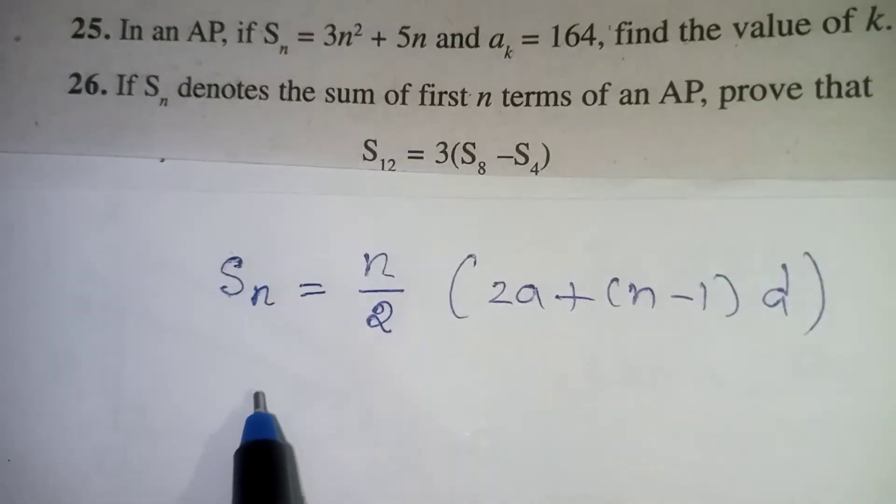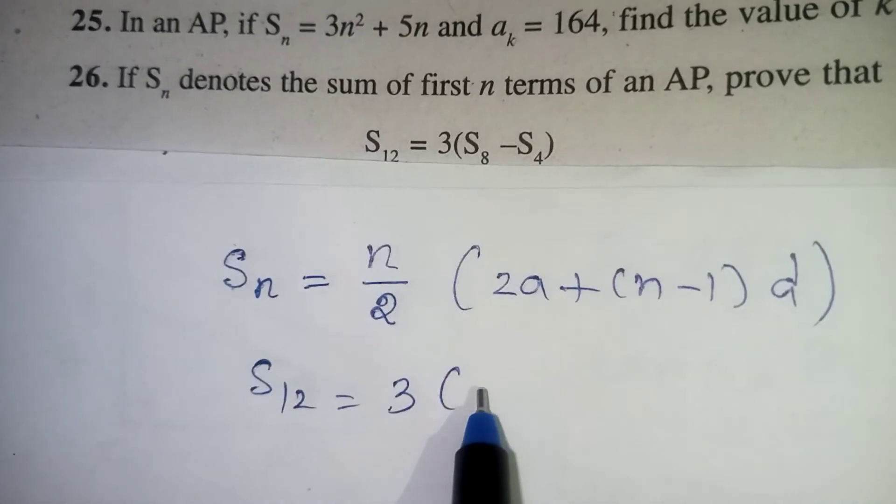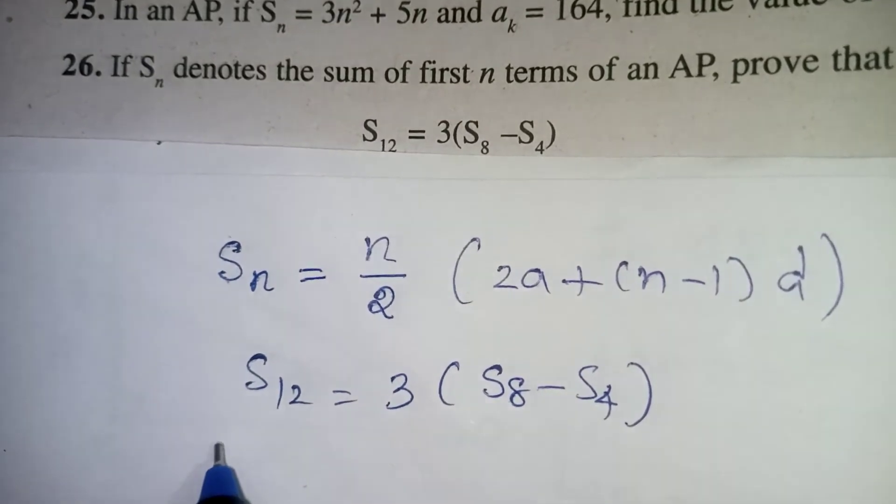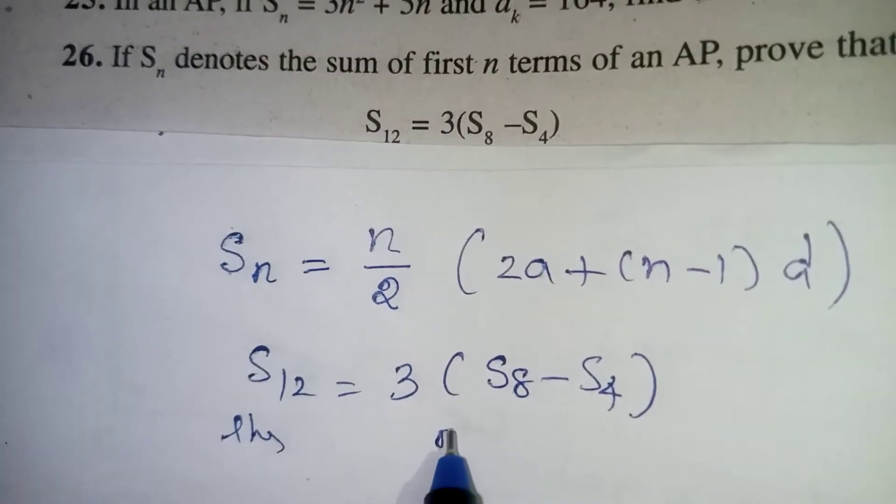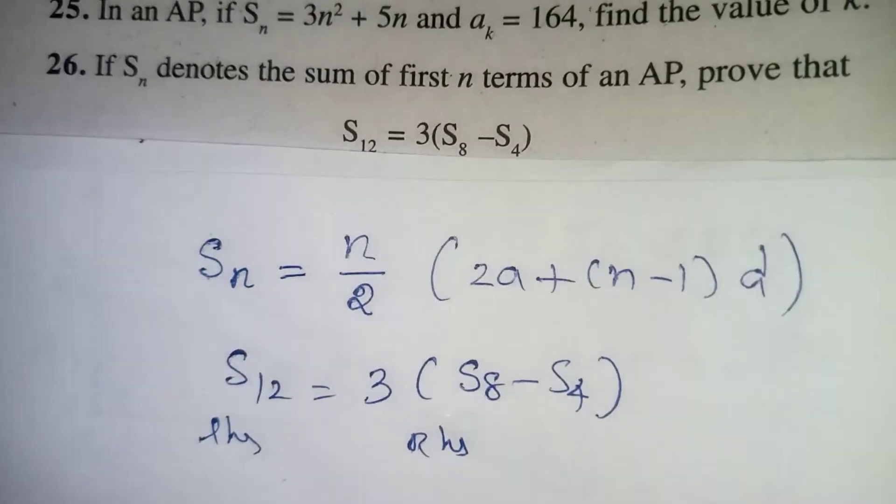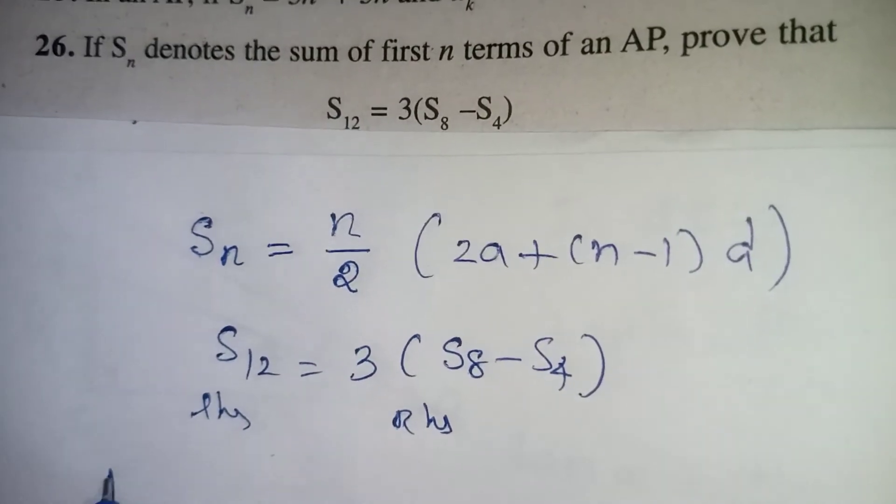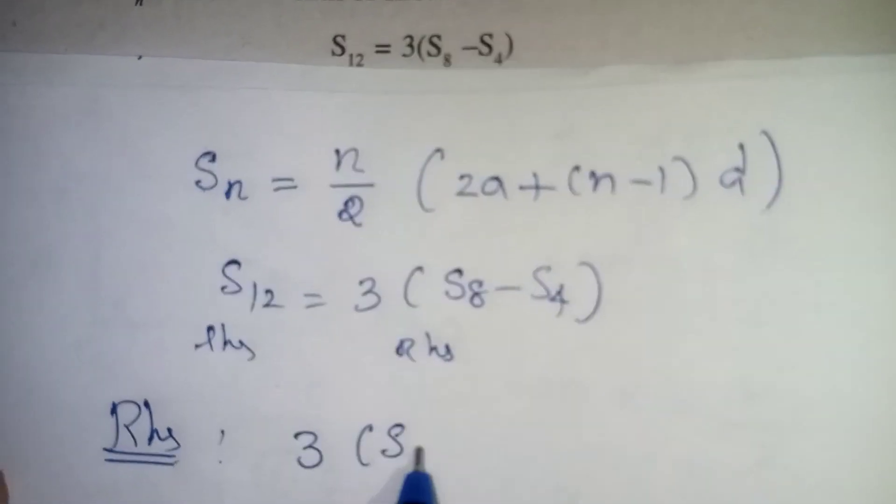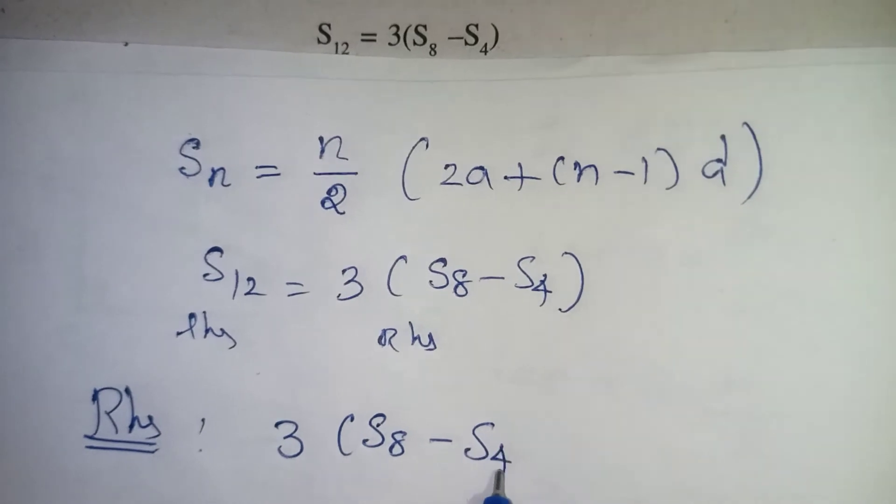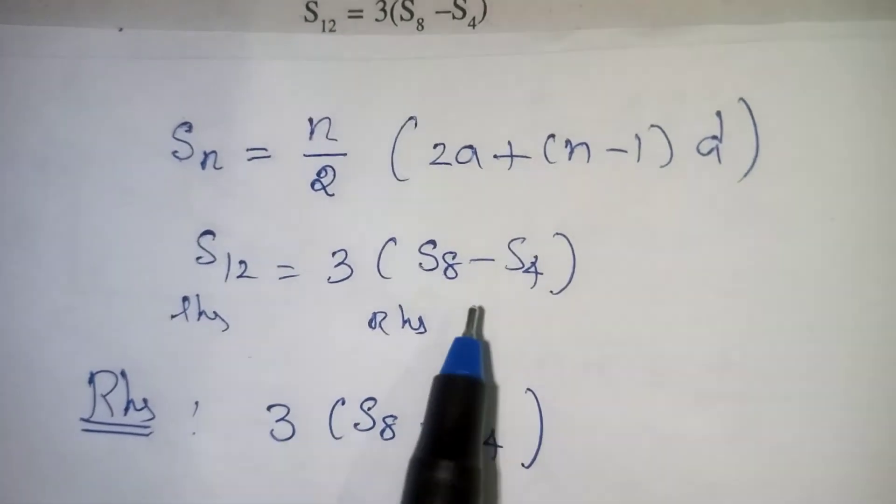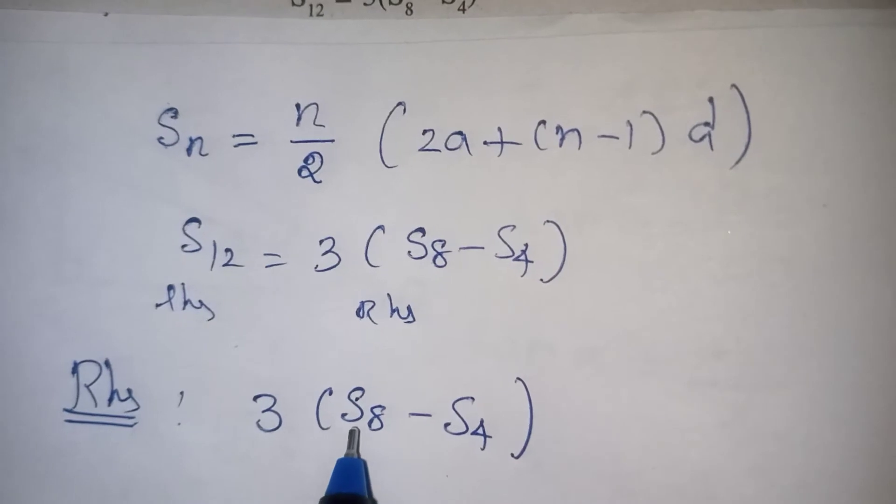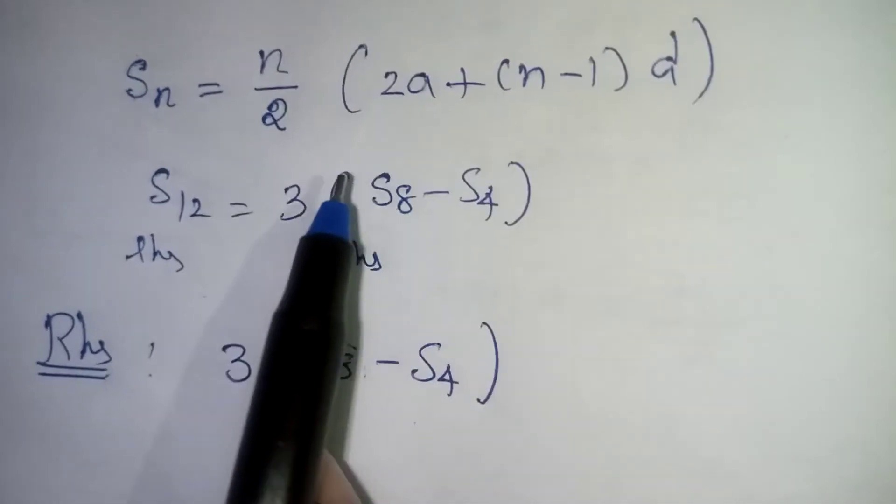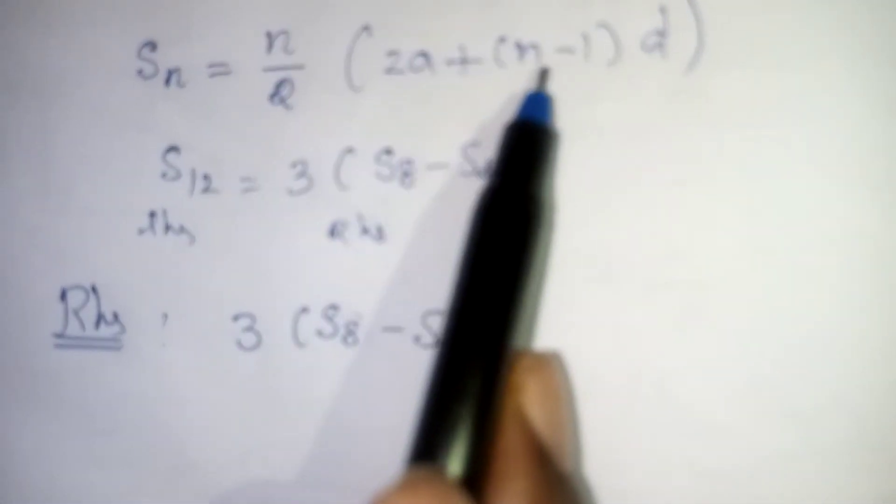Now we are going to prove that S12 is equal to 3 times S8 minus S4. So this is your left side and this is our right side. So we are going to take the right hand side, then we are going to solve. We are going to bring the left hand side value. So RHS we are going to take now, that is 3 times S8 minus S4 we are going to solve. Now in the place of SN we are going to apply this formula. Now by looking at the 8, 8 is our n value now. Now it looks like SN. In the place of n is given as 8. Now the same formula, the n place alone you put that 8. Remaining element should come as it is.